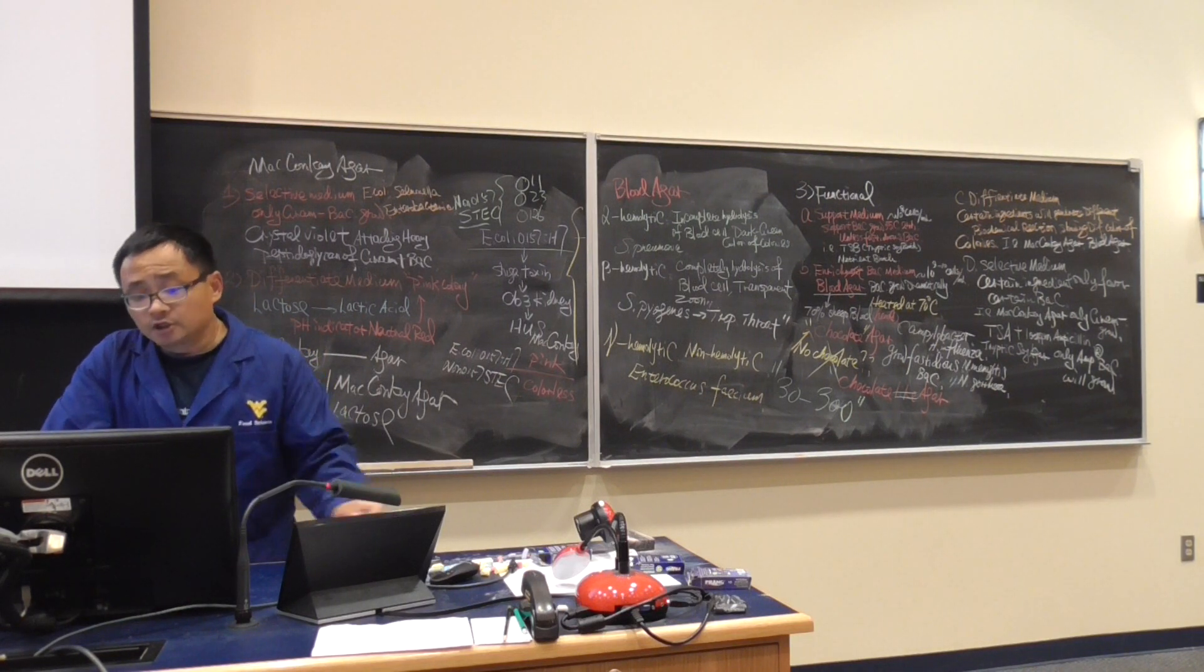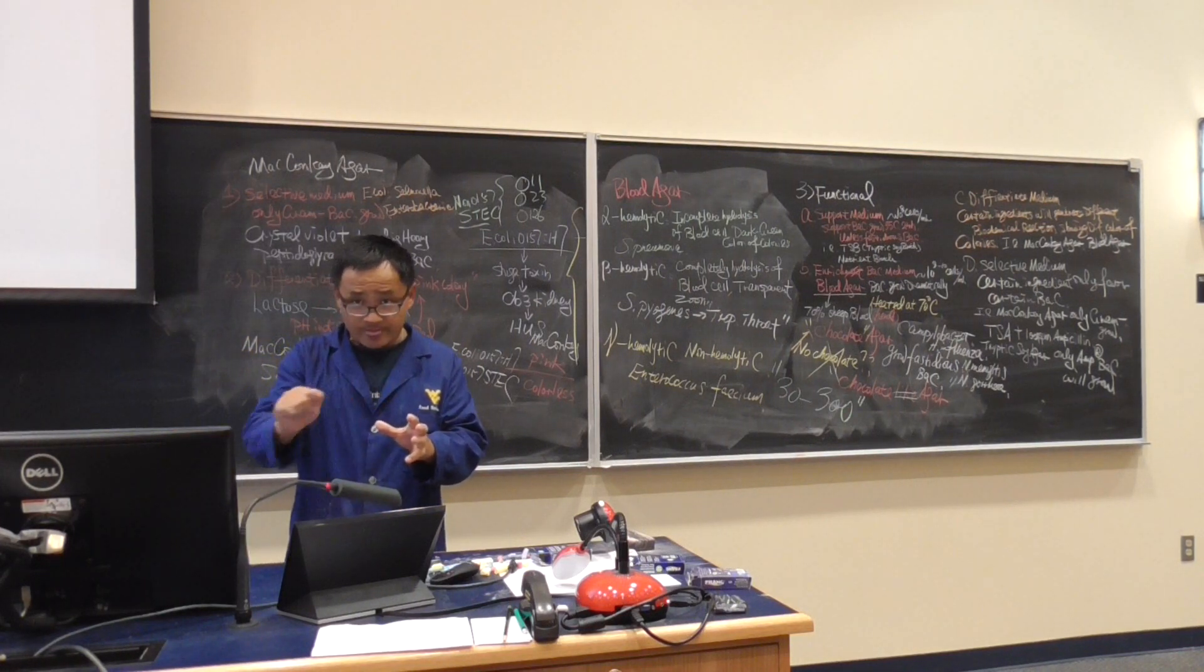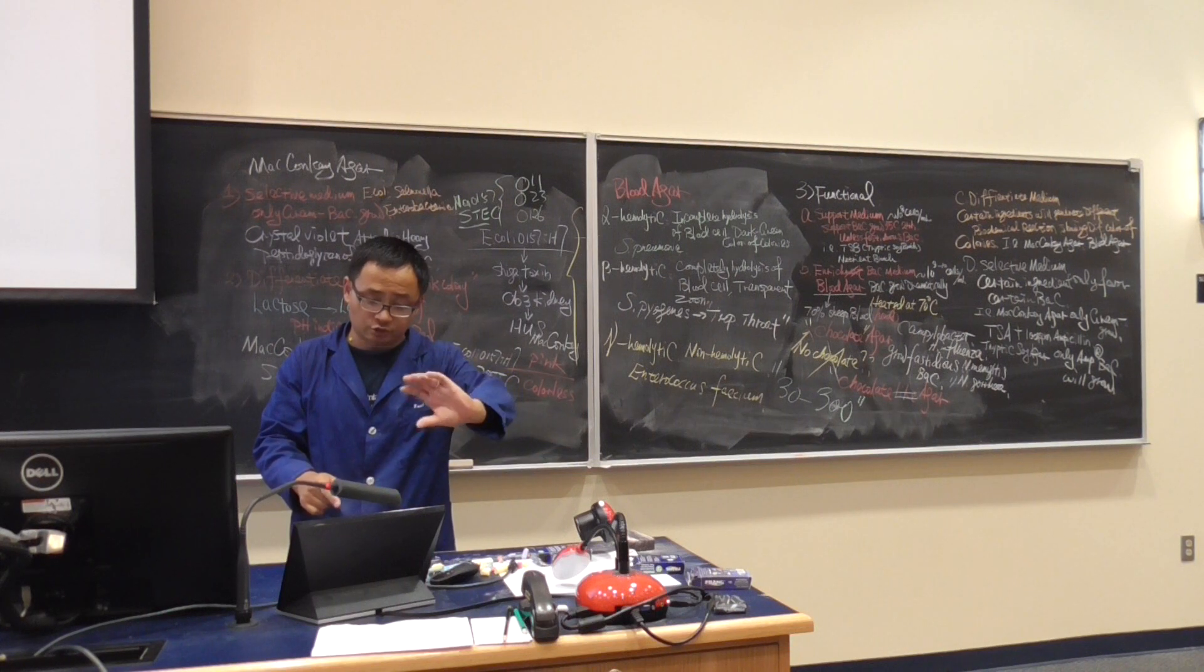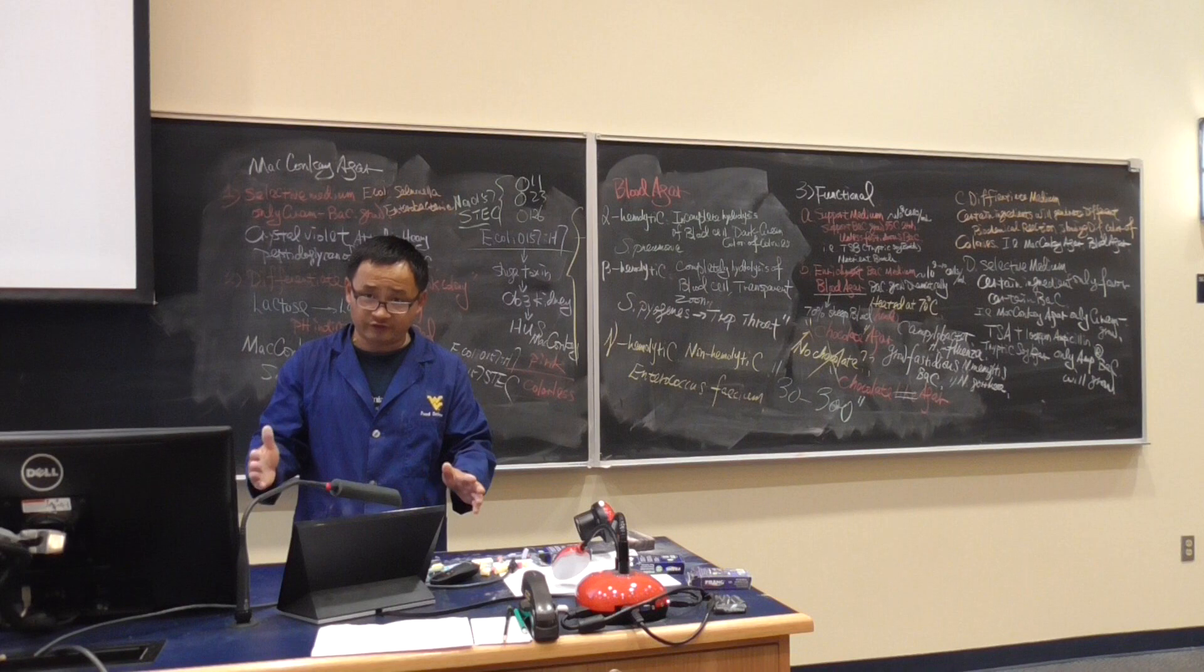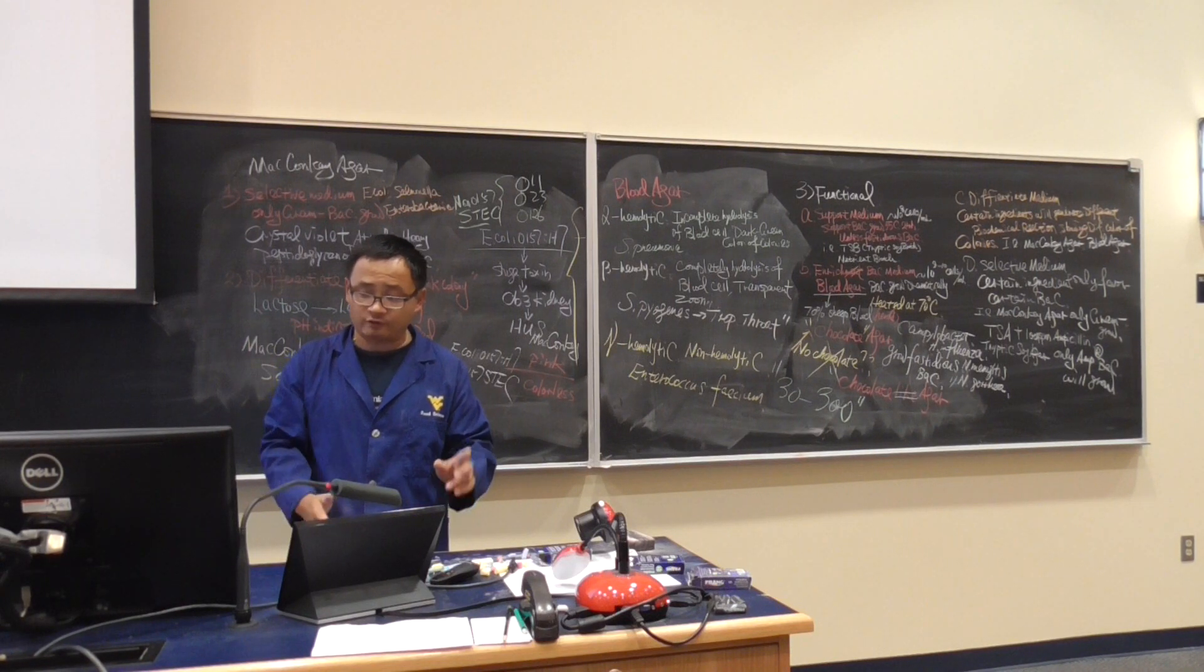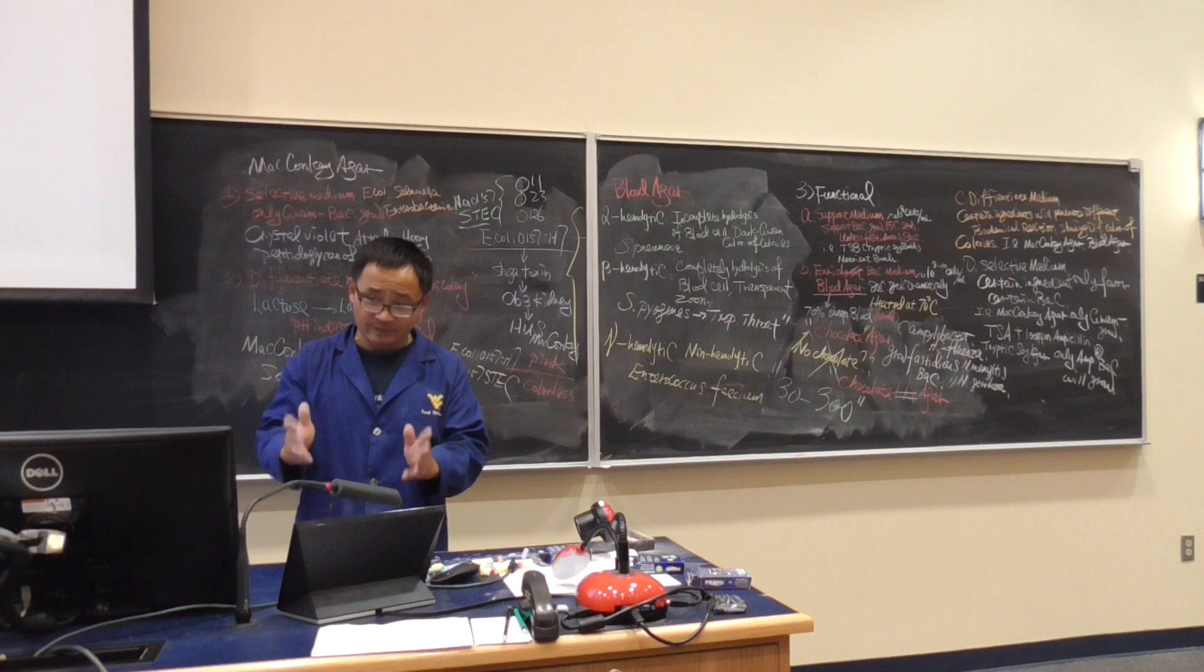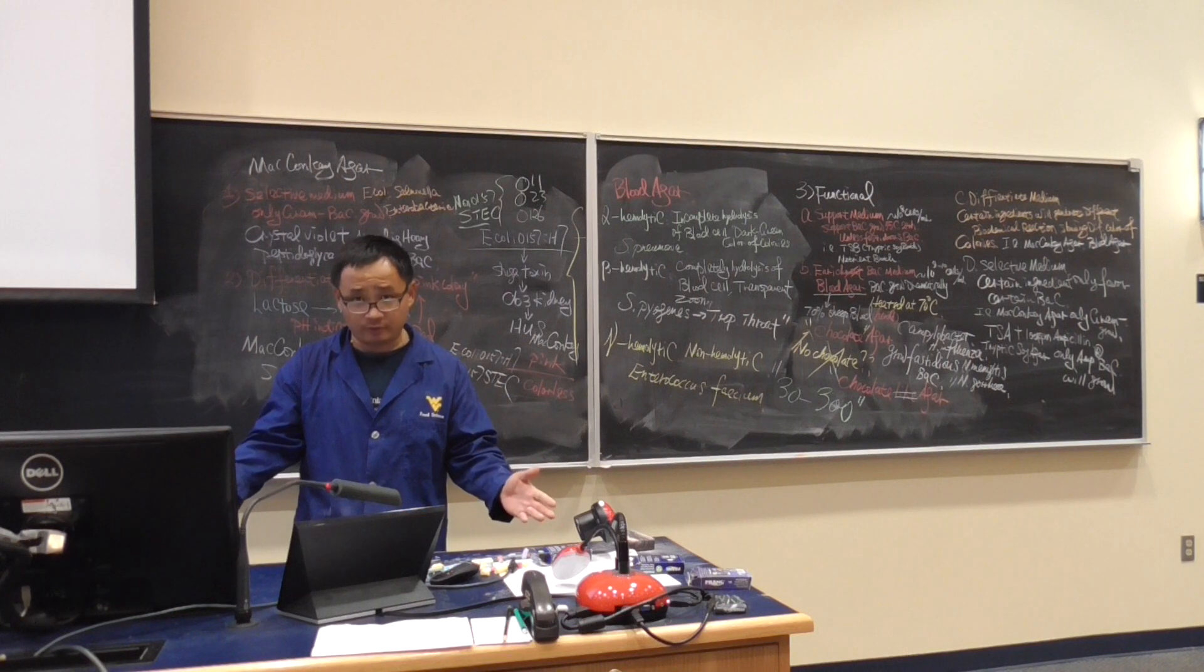What is pour plating? Spread plating is the agar is already there, you spread. Pour plating is we're using melted agar. We pour the agar onto the surface, then we mix it. It will be solidified. So compared to the spread plating, the pour plating has one good thing. It saves time and energy because you can make the agar and do the plating at the same day. Spread plating, you need one day to prepare the agar.